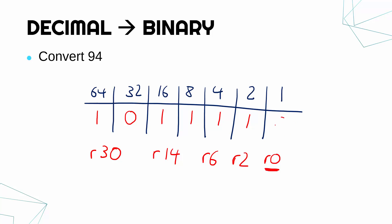You can celebrate when you get to that point, but we've got to put in our final zero and the ones column. So the answer is 1011110, that is 94 in binary.